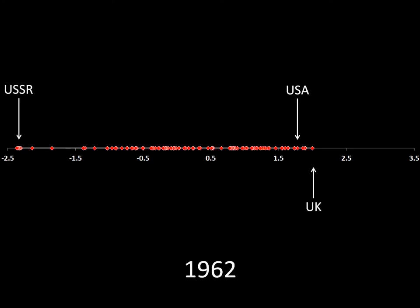This is how the General Assembly voting data looked in 1962, at the height of the Cold War. We see that the Soviet Union is all the way on the left — it's got a very low score, in the negatives — while the United States and the United Kingdom are all the way on the right, and a bunch of other countries lie in between.